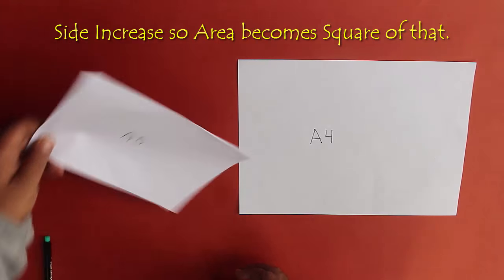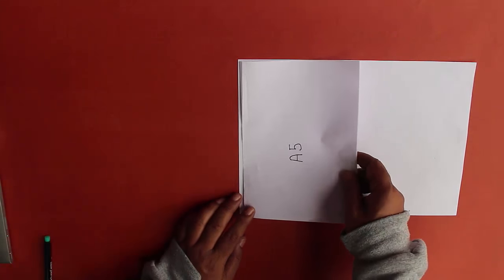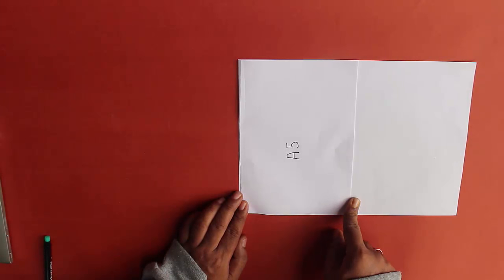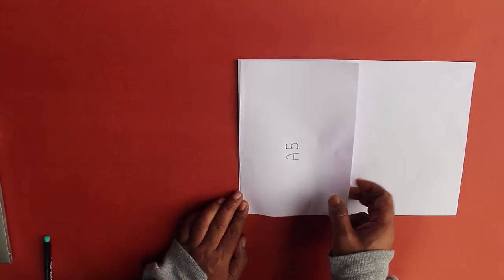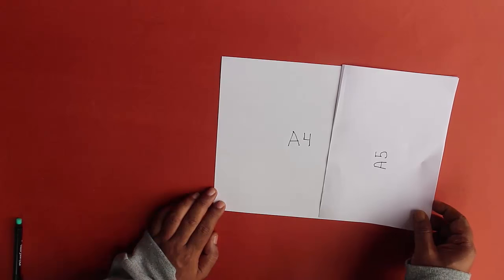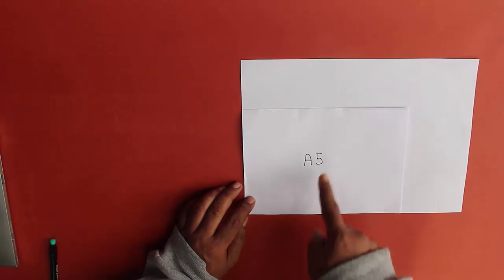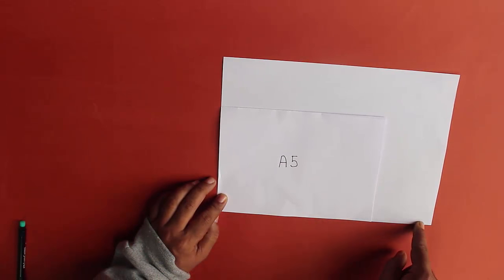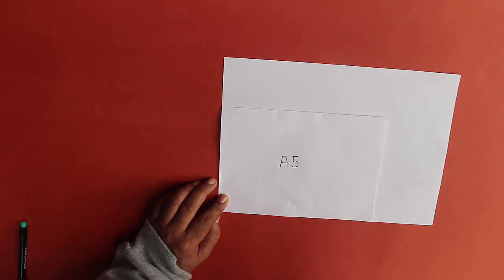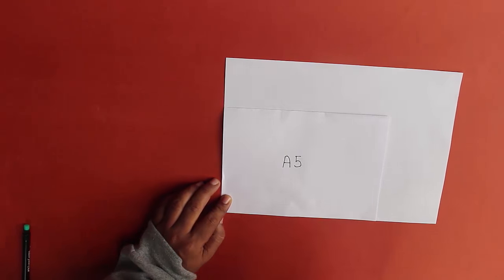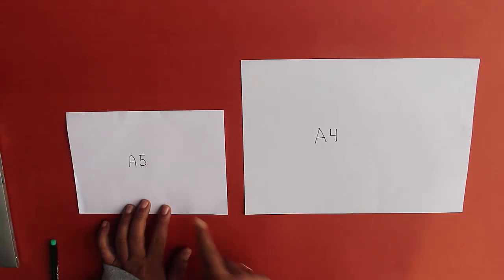In this case however the area has become half, because A5 is half of A4. So size of A5 must be increased by square root 2 for the area to become double. And therefore the